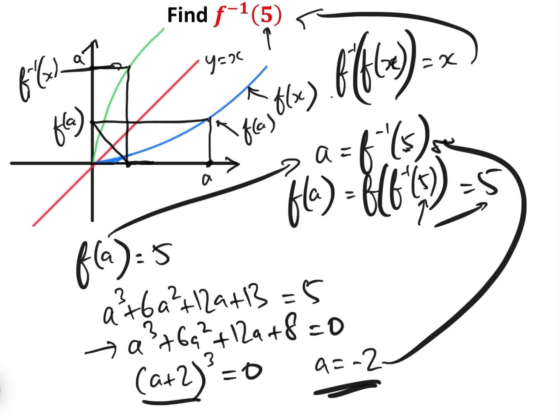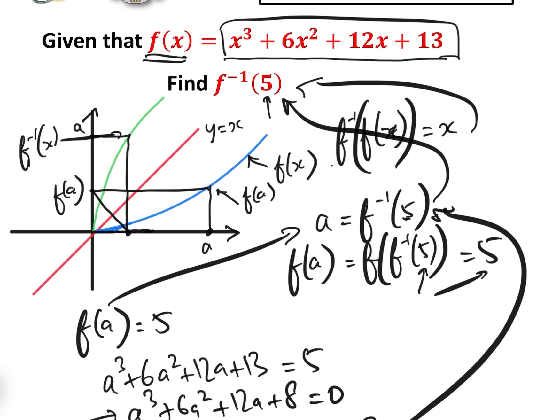And so a, given that a is f inverse of 5, we have found our solution: f inverse of 5 is minus 2. Now you might think that we could do this by finding the inverse, and we can, and I'll just show you quickly how to do it by finding the inverse.